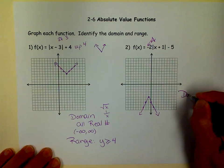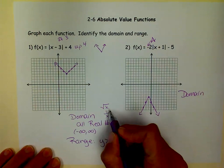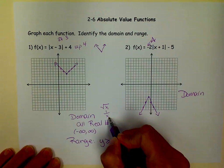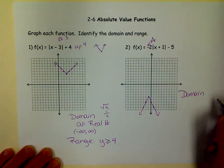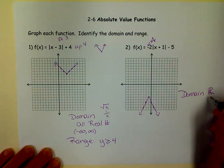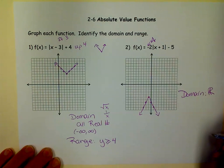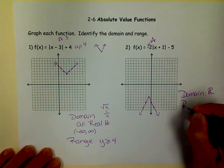So, now we need to find our domain. Our domain, again, no square roots with x's, no denominators with x's. So, our domain is all real numbers. And sometimes people use the real number symbol. The range, on the other hand,